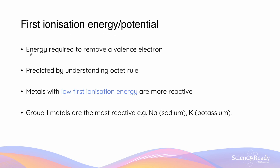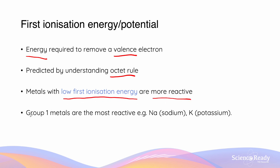The first ionisation energy is the energy required to remove the first valence electron from a particular element. We can predict the first ionisation energy trend using the octet rule — if you're unfamiliar with this, please watch the video on periodicity. Metals which have a low first ionisation energy are going to be more reactive, and group 1 metals are the most reactive because they have the lowest first ionisation energy. Examples of such group 1 metals include Na (sodium) and K (potassium).